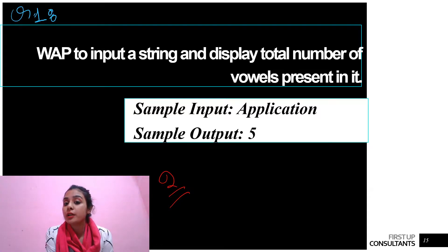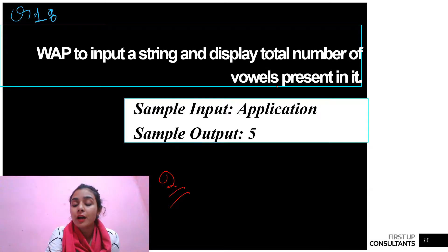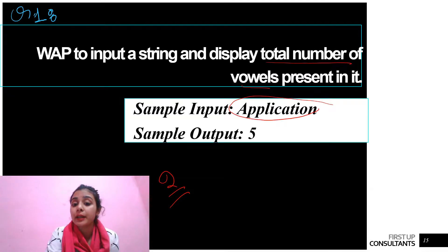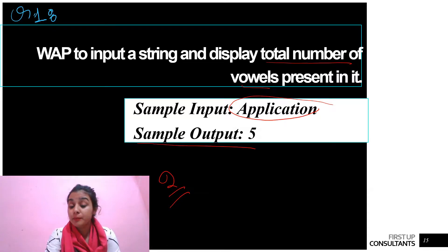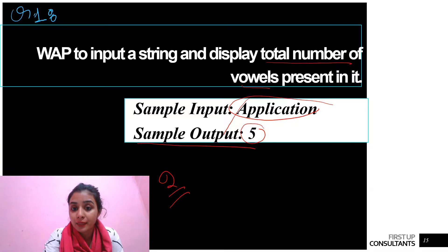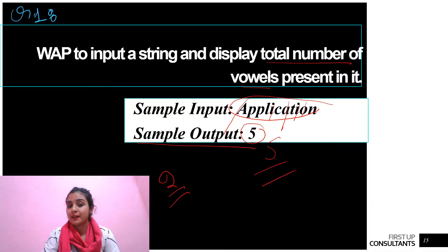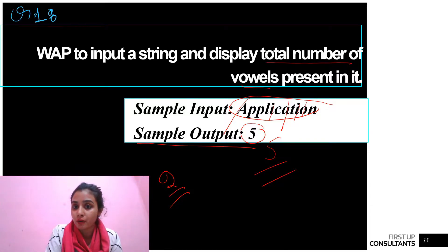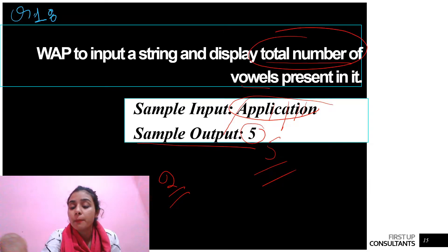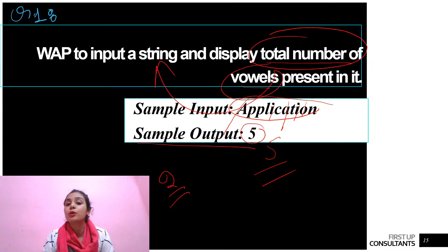So this is our program — we have to check the total number of vowels. For example, if the input is 'application', the sample output is five, meaning there are five vowels: a, p-p, l-i, c-a, t-i-o-n — one, two, three, four, five. So we have to write the code in Java to find the total number of vowels present in the string input by the user.